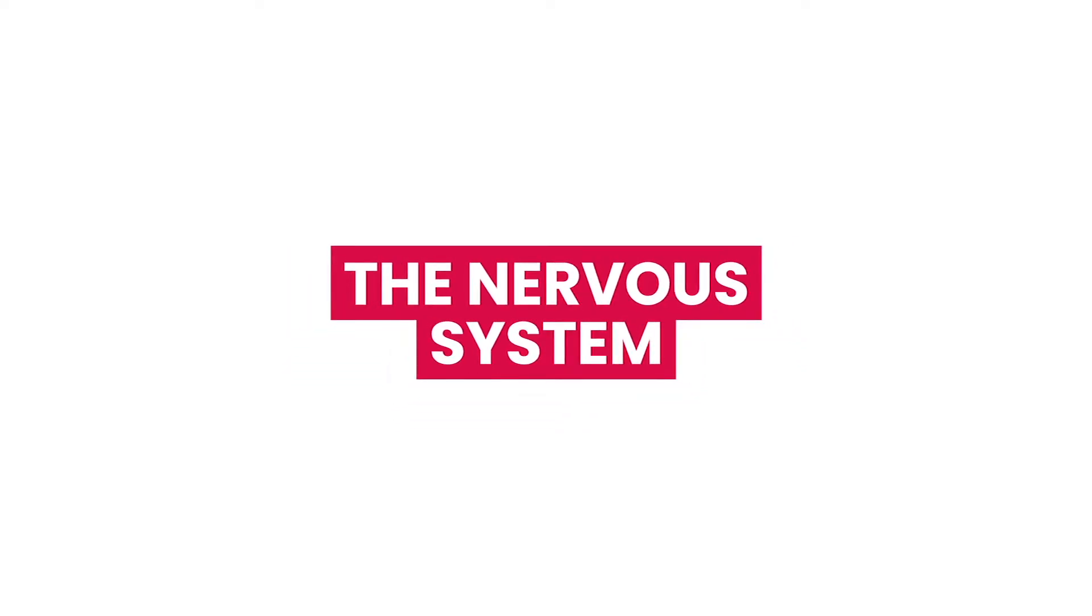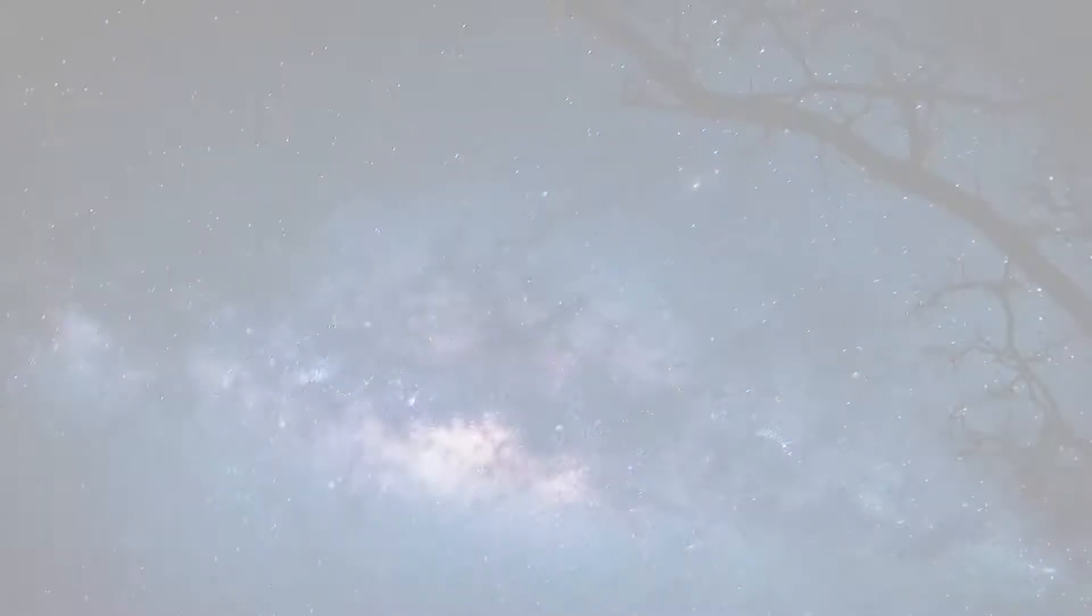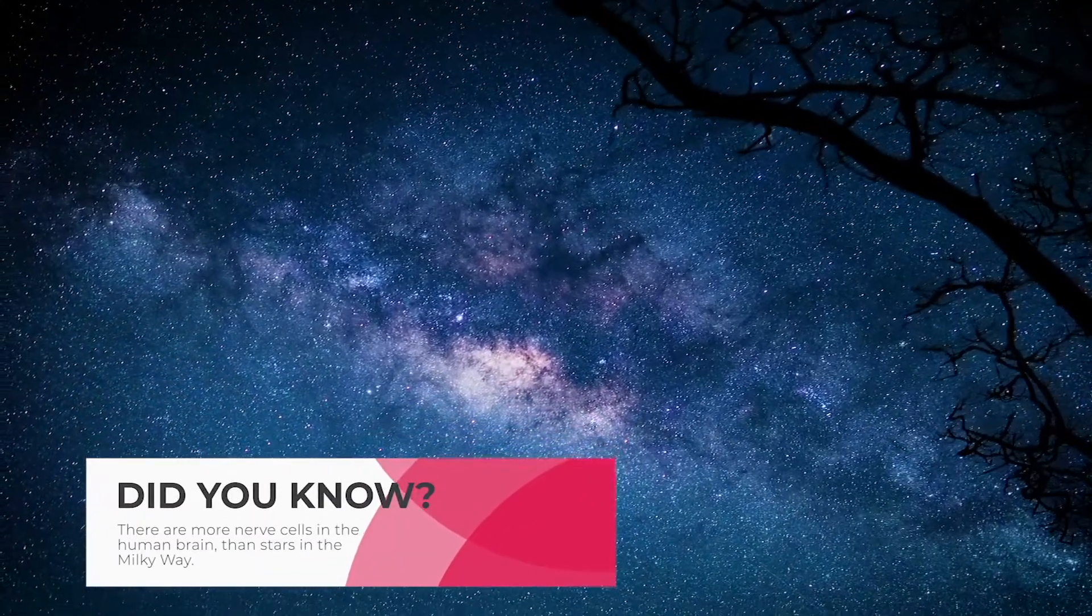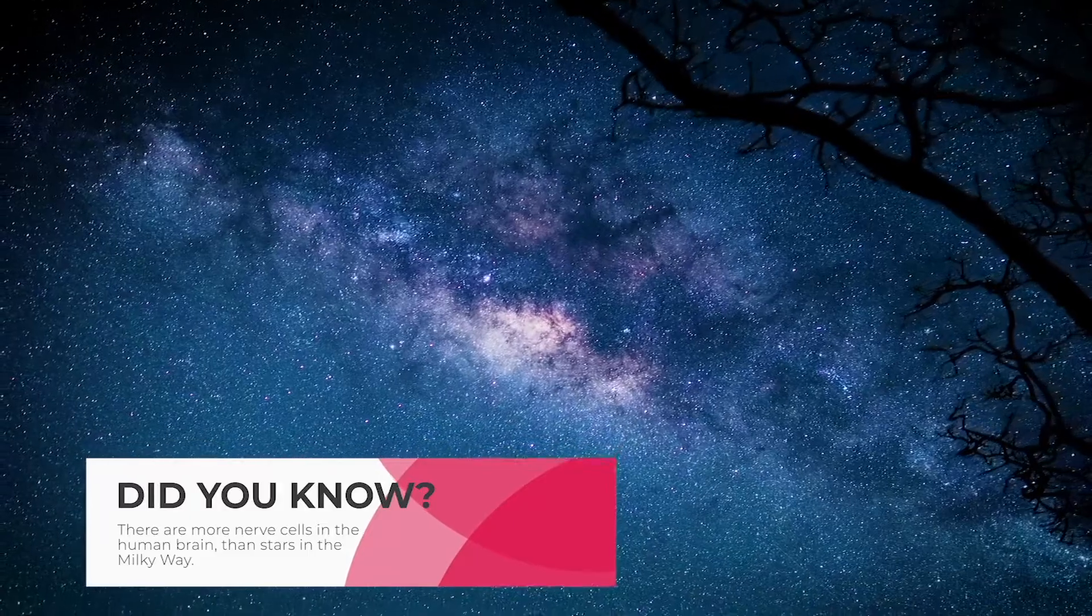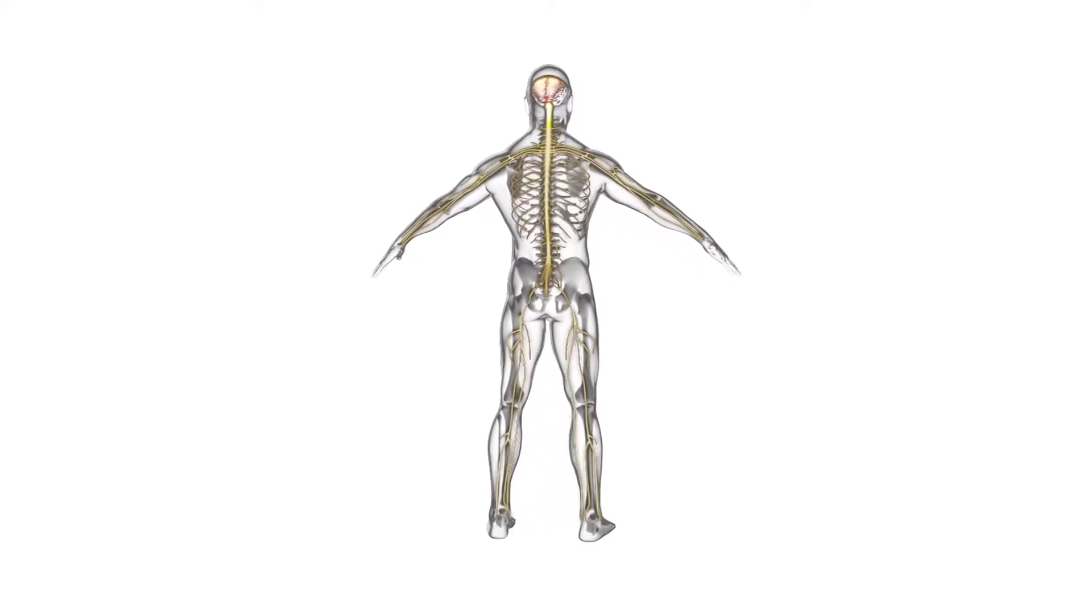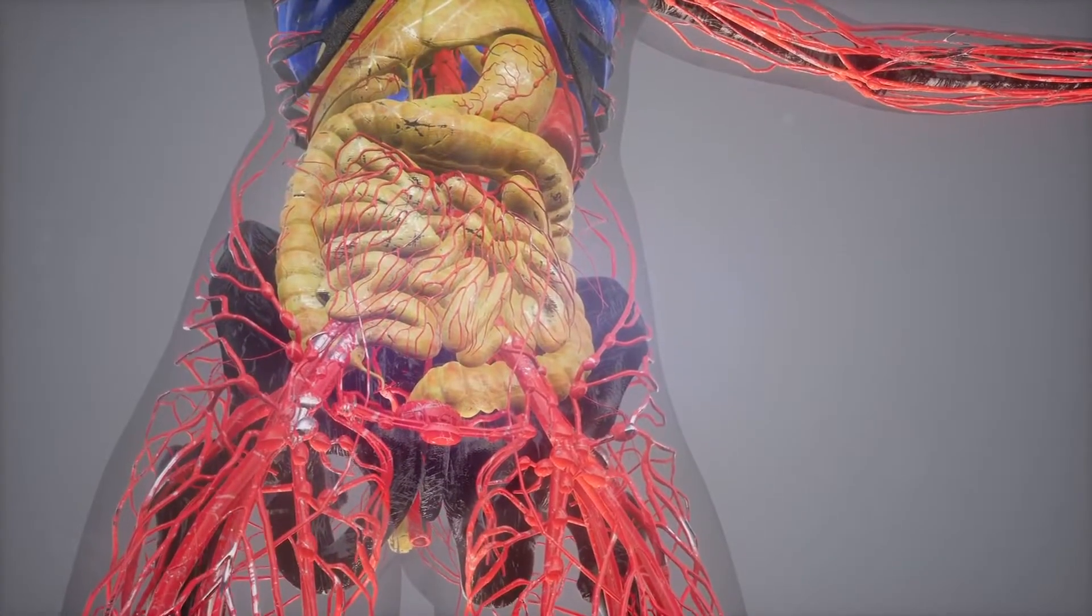The nervous system. Did you know there are more nerve cells in the human brain than there are stars in the Milky Way? The nervous system is the main control and communication center of the body. It is responsible for maintaining balance of all internal body processes.